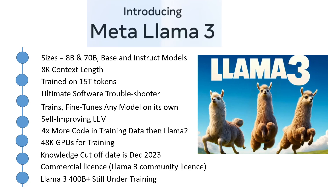Llama 3 is an auto-regressive language model that uses an optimized transformer architecture. In this video I'm going to give you the highlights of the Llama 3 models. The tuned versions use supervised fine-tuning (SFT) and reinforcement learning with human feedback (RLHF) to align with human preferences for helpfulness and safety. Notably, they did not use DPO, yet the performance is awesome. Both the 8B and 70B versions use grouped query attention (GQA) for improved inference capability, which is now an industry standard.